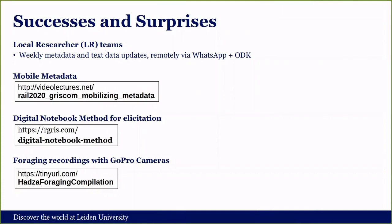We were successful in a number of ways during the first year of this project. The plan to expand on the Gorwa local researcher model to cover different geographical areas was largely successful, and to this day we're able to communicate remotely with each local researcher station via WhatsApp. We also successfully implemented a mobile metadata system using the Open Data Kit platform, which allows us to view the metadata created by each local researcher on a cloud server. We used an elicitation method developed by my colleague Manuel Otero and me to quickly create timeline transcriptions and translations, and we also created a unique set of mobile recordings of spontaneous speech during traditional foraging activities.